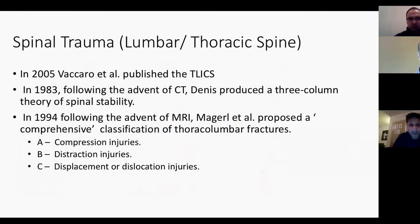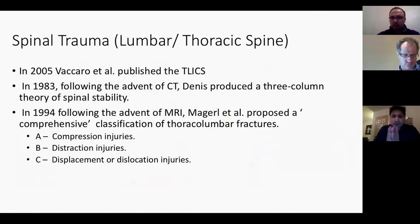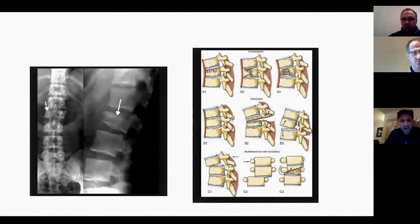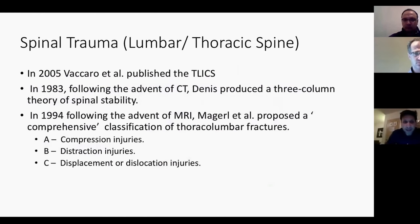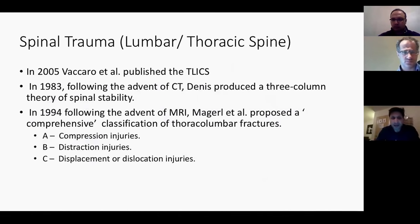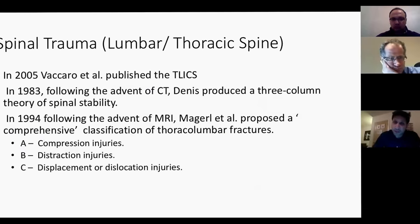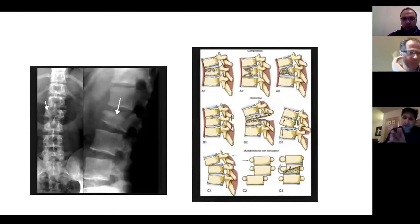Cauda equina will be covered by someone else, so I'll come to spinal trauma. In a lumbar or thoracic spine setting, you will always see a burst fracture. It's the type A fracture as classified by AO - classified in 1994. The Vaccaro classification came in 2005, which everyone now follows. You need to know TLICS for the purpose of this exam, but for now just concentrate on the type A compression fracture in the lumbar spine.